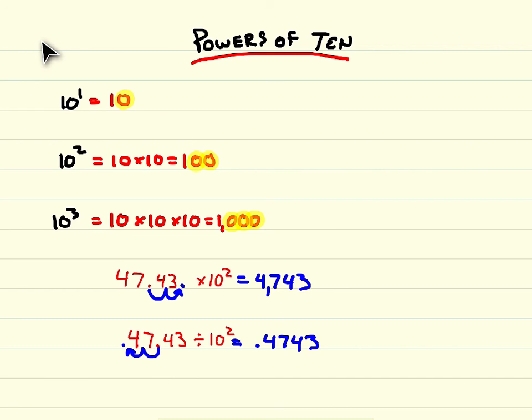So again, powers of ten are very easy to use. All you do is multiply and divide by powers of ten by moving your decimal as many places as your exponent says. Remember, division, move your decimal to the left to get a smaller number, and multiplication, move your decimal to the right to get a bigger number. Thank you for watching my video on powers of ten.